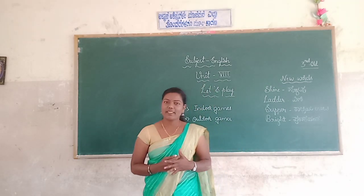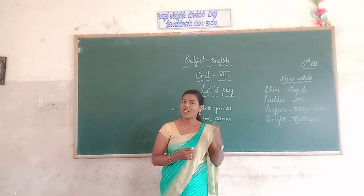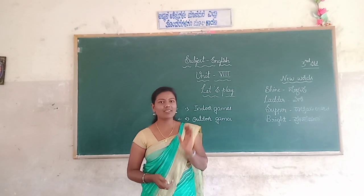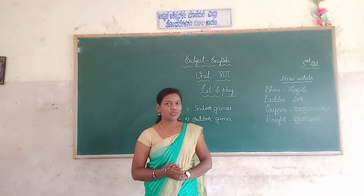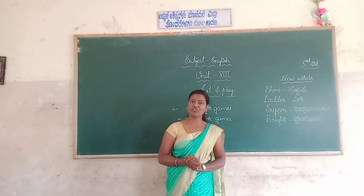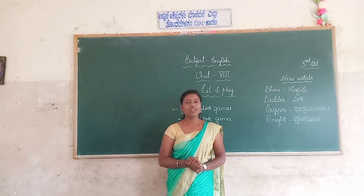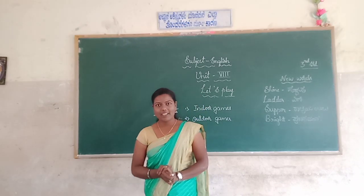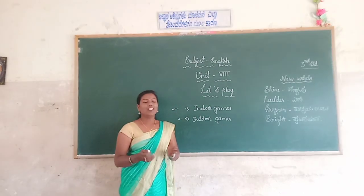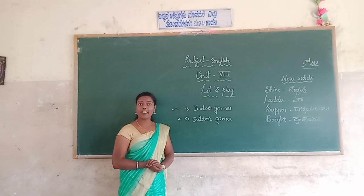We all know how to play. There are two types of games: first, indoor, and second, outdoor games. Indoor games are games which we can play inside of our home, for example: carrom, chess, etc. And outdoor games are games which we can play outside of our home, for example: running, kho-kho, football, etc. In this poem also, the child likes to play. It's unique.